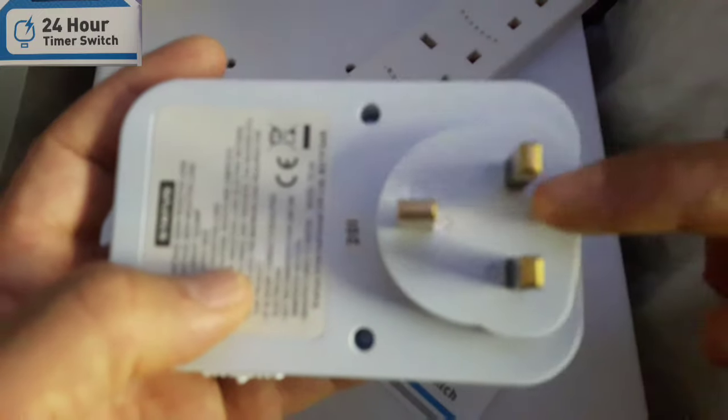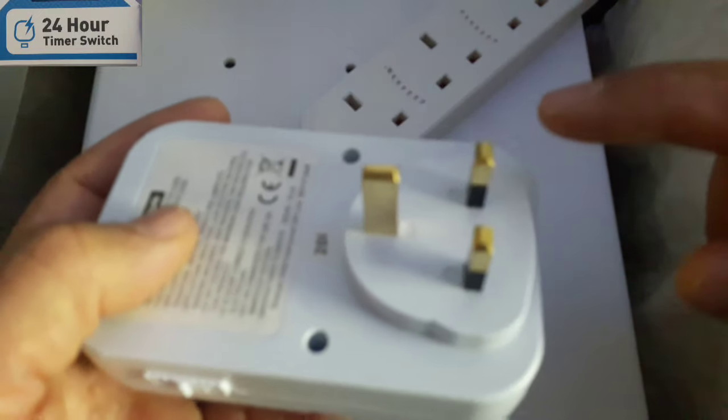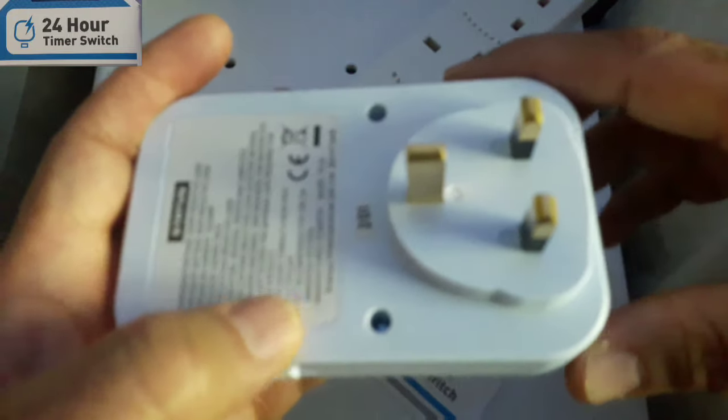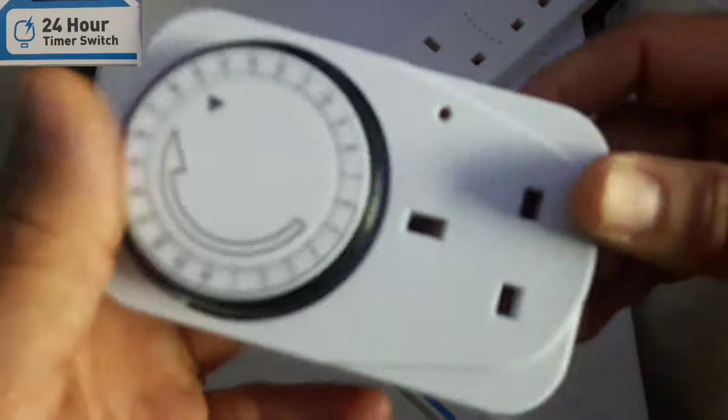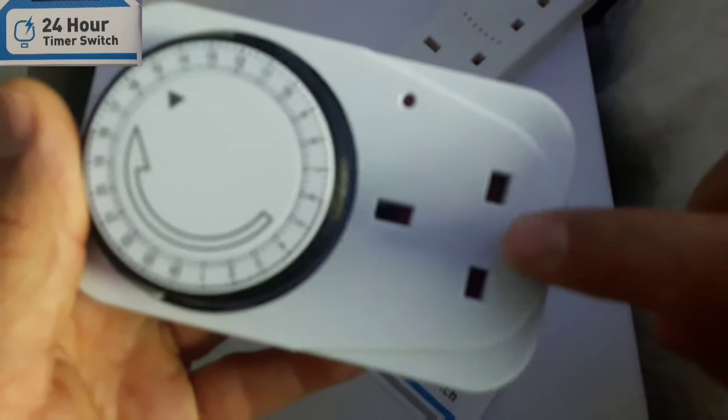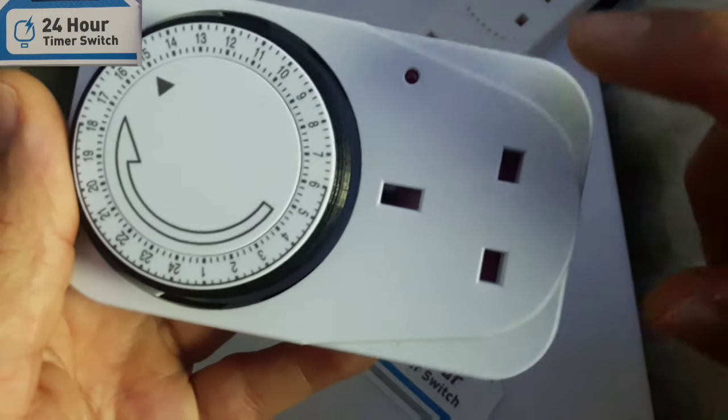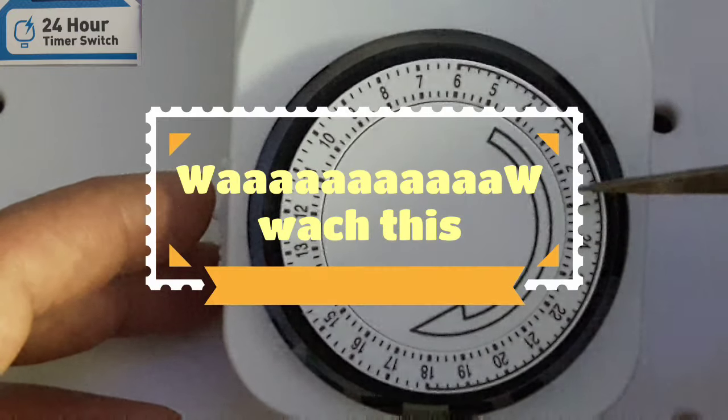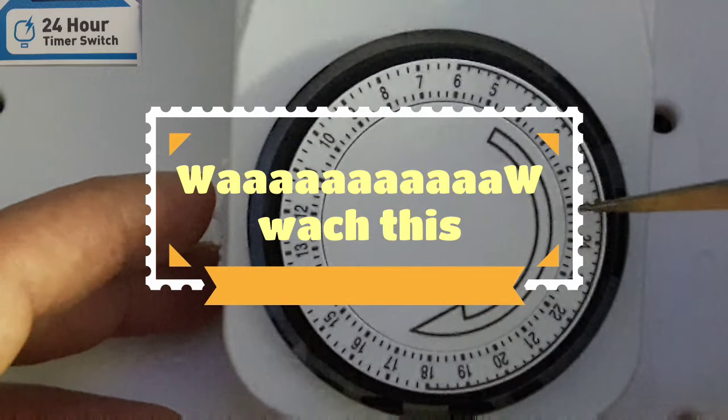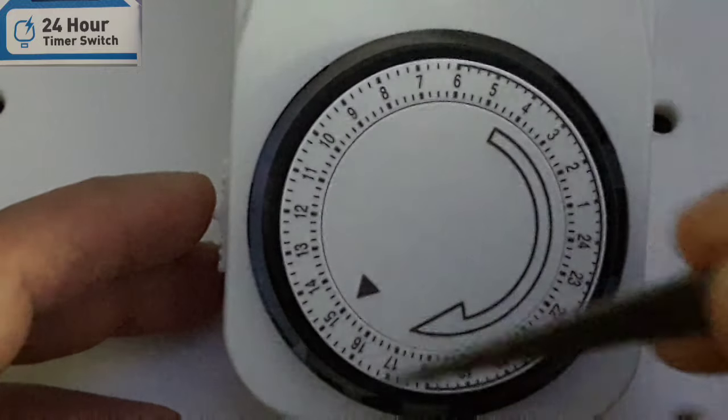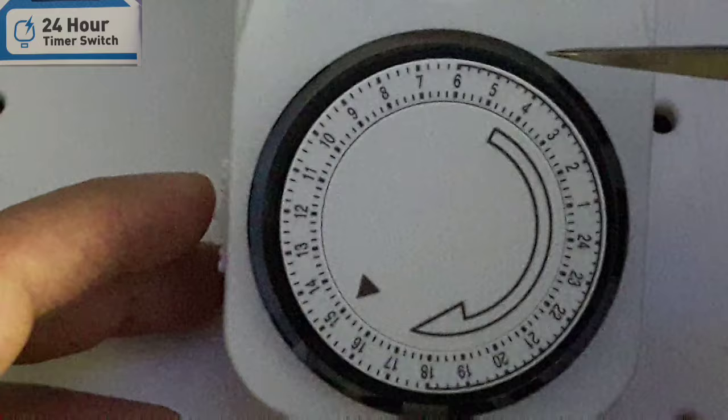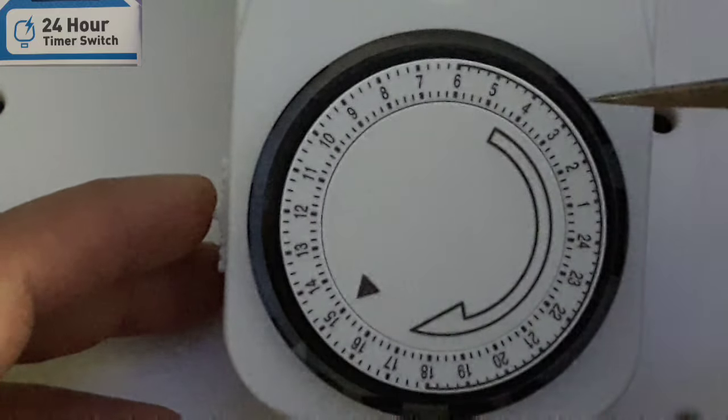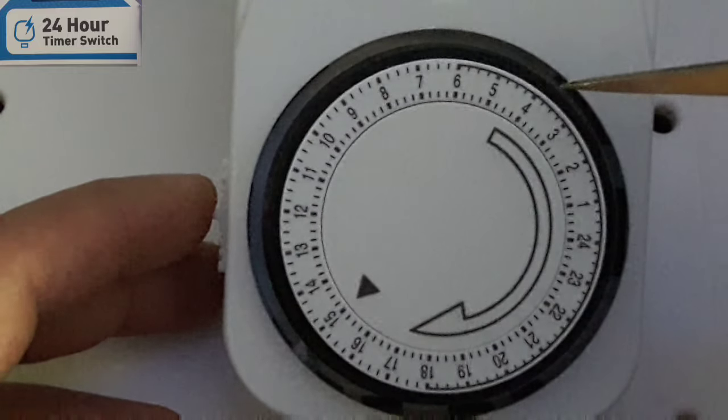You've got the back plug that goes to the wall socket, and you've got the front socket which goes to the appliance. I've got a clock here: one, two, three, four, five all around.